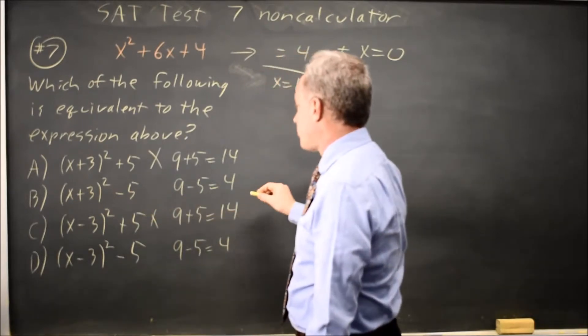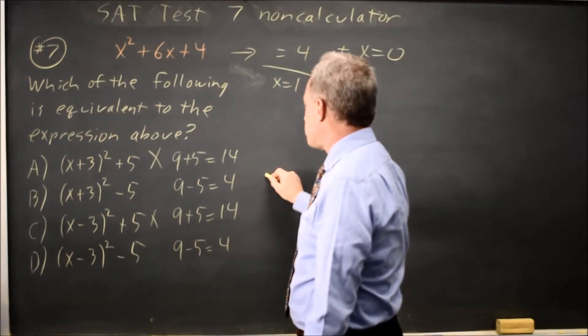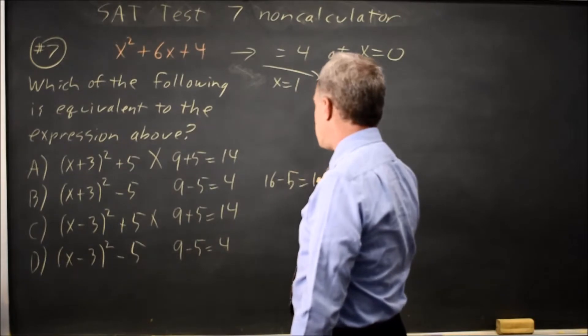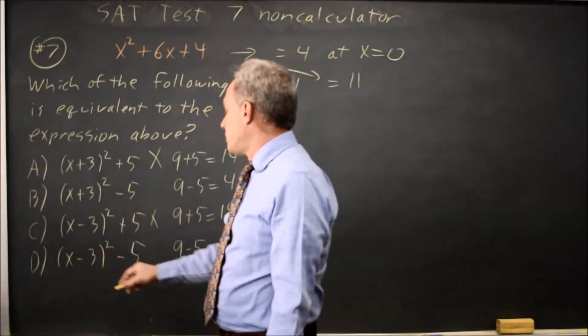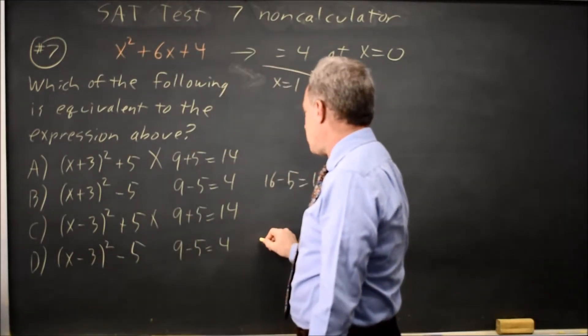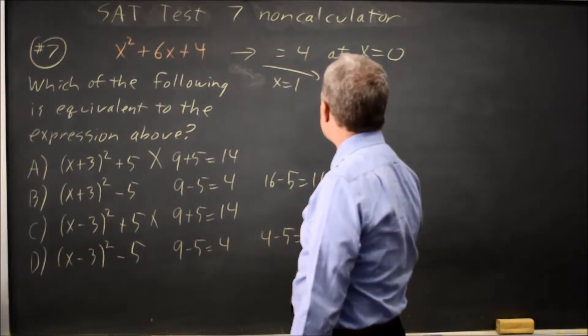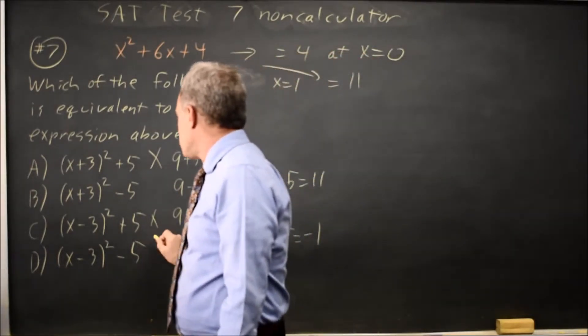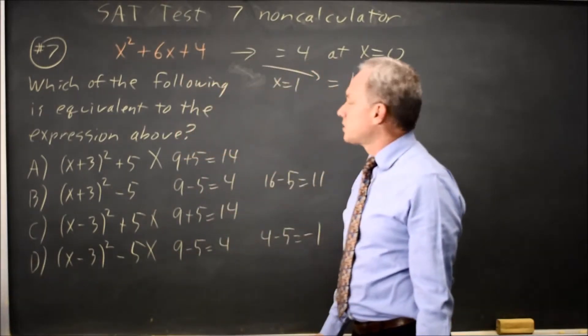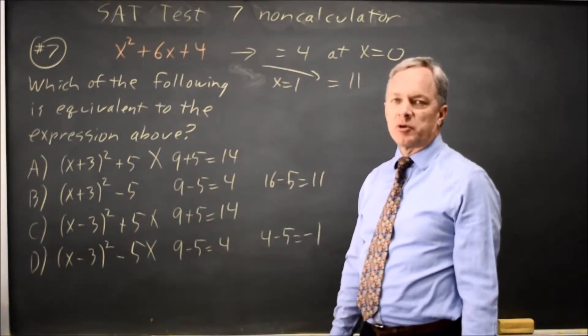1 plus 3 is 4. 4 squared is 16, minus 5 is 11. And over here, 1 minus 3 is negative 2. Negative 2 squared is positive 4, minus 5 is negative 1, which is not positive 11. So choice d did not match at 1, which means it can't be equivalent,